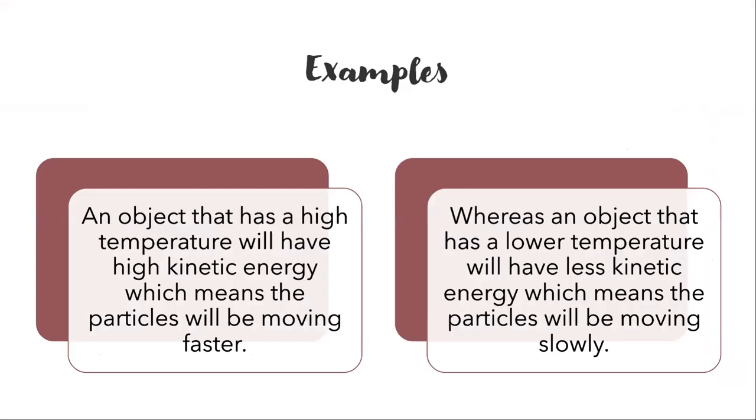Here are some examples. An object that has a high temperature will have high kinetic energy, which means that the particles will be moving faster. This is like when you blow into a balloon and it has molecules, the gases of the molecules move faster. And whereas an object that has a lower temperature will have less kinetic energy, which means the particles will be moving more slowly, this could mean like a liquid.